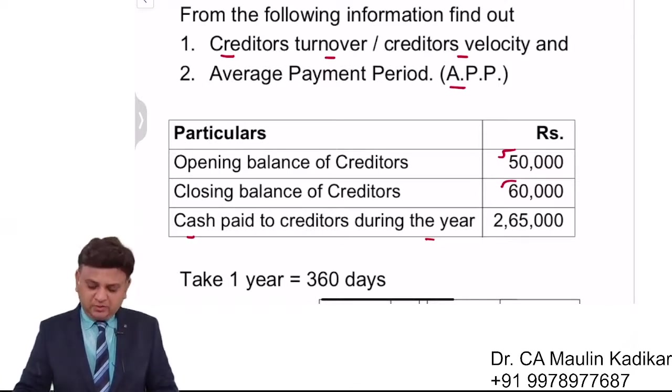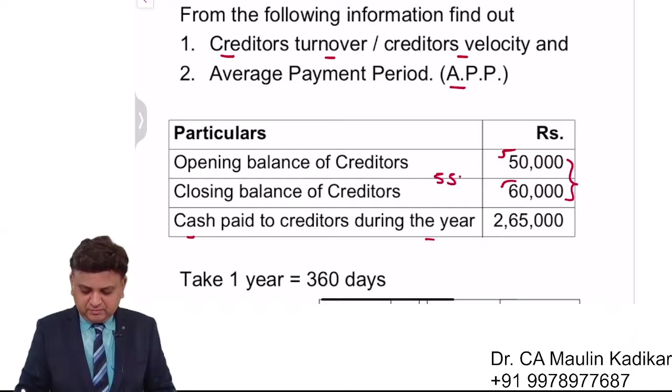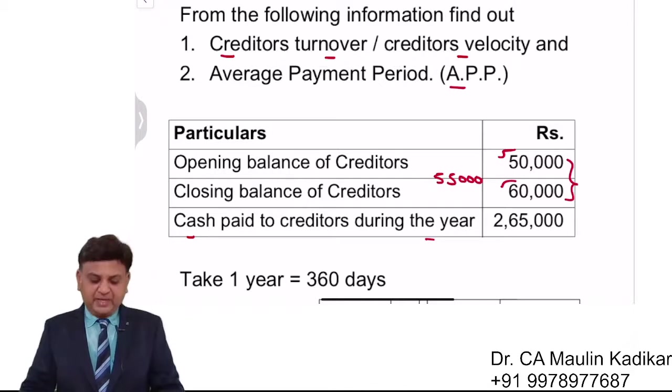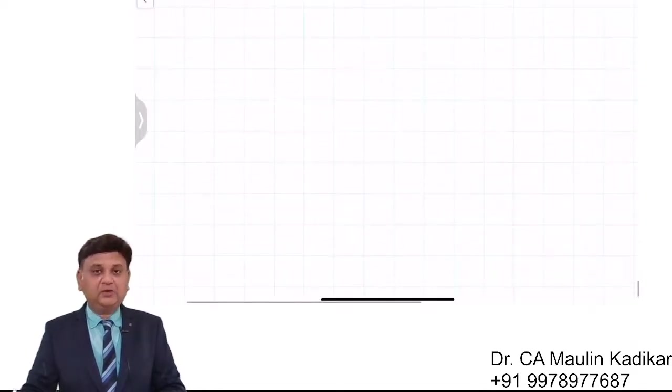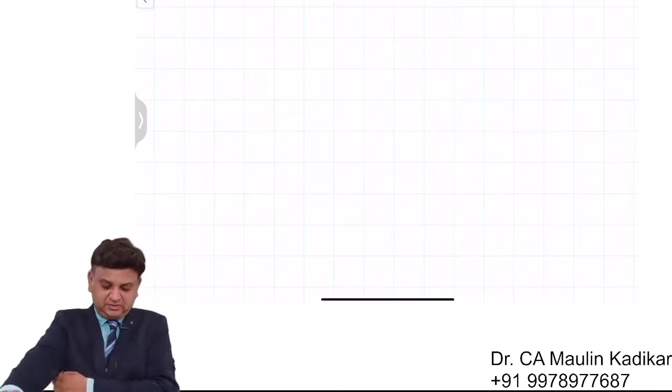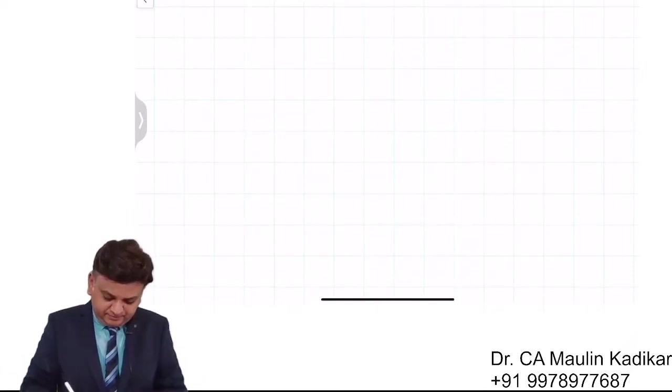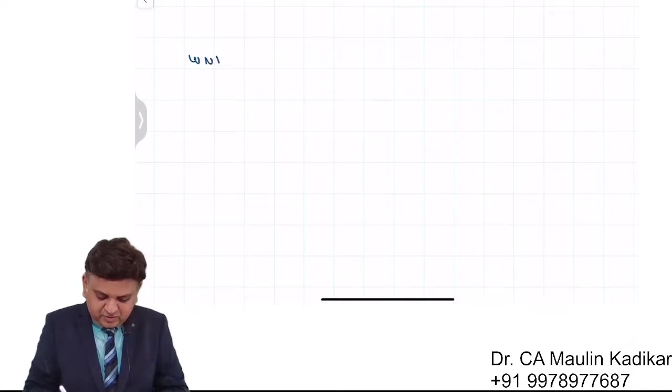So friends, over here opening creditors is given, closing is given, so based on that the average can be calculated: 55,000. 50 plus 60 divided by 2. However, the purchase information is not given, so we'll prepare a working note to calculate the purchase. I request all of you to write the answer.